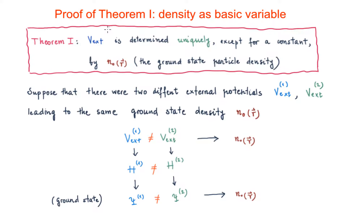We are going to prove the first theorem of Hohenberg and Kohn, which basically says that the electronic density is going to be the basic variable to get any property of the solid.